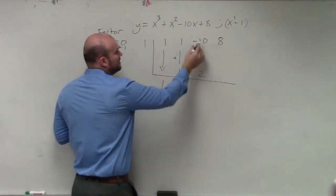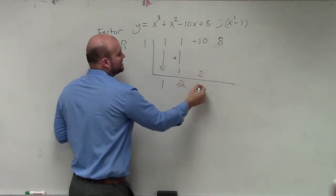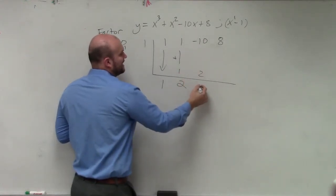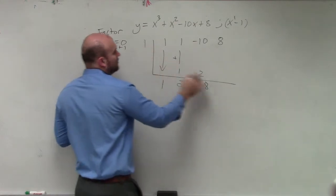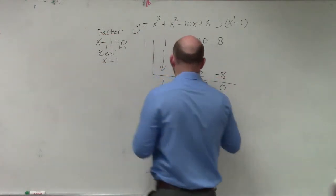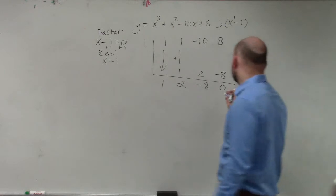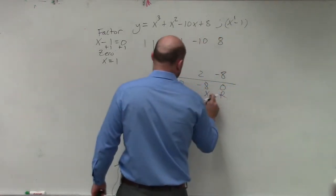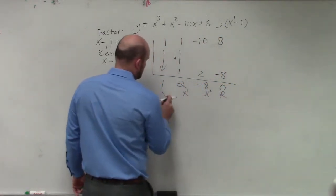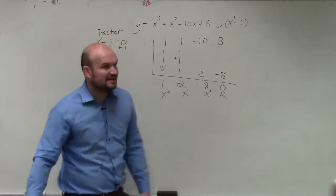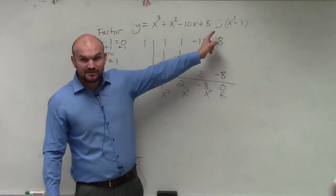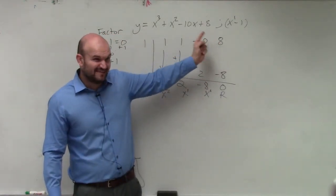2 times 1 is 2. Negative 10 plus 2 is going to be a negative 8. Negative 8 times 1 is negative 8 and 0. So therefore, we have a remainder of zero. So can we say that it is a factor? Yes, because it evenly divides, right?